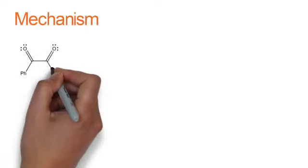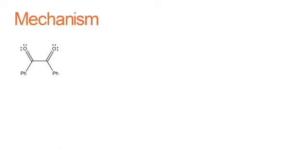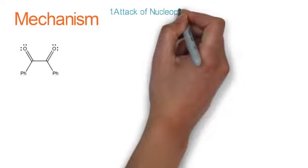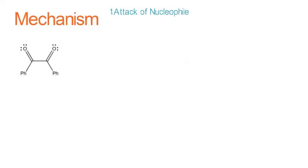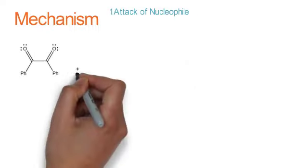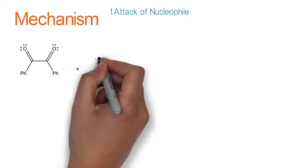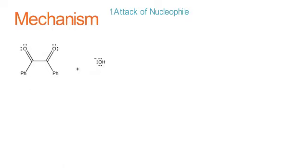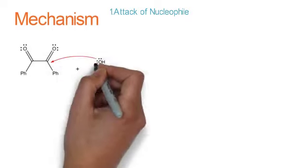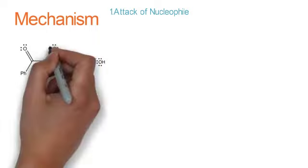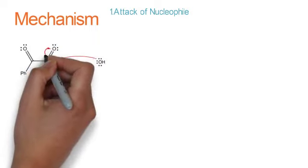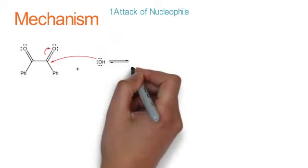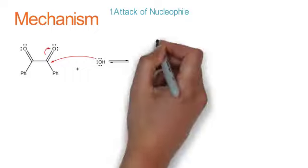So in the first step of mechanism, nucleophile attacks carbonyl carbon. This carbonyl carbon is an electron deficient center, so there are two electron deficient centers. Nucleophile attacks one of them. Nucleophile has three lone pairs of electrons and comes from sodium hydroxide after dissociation. Once it attacks, it breaks the pi bond between carbon and oxygen.